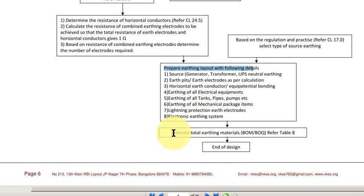And then finally, you have to estimate the total earthing material. Once you have sized the earthing conductor and you have the layout, with these two inputs, we can estimate the total earthing material - which we call as bill of material or bill of quantity. I will explain that in the next lecture. Thank you.